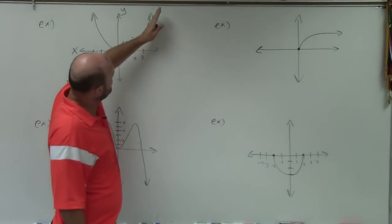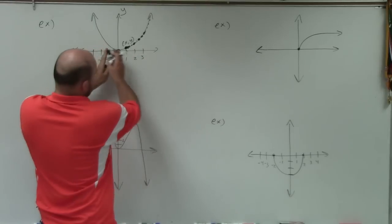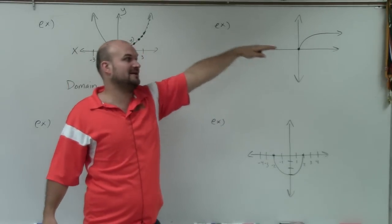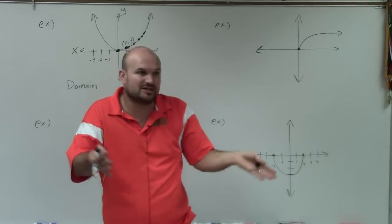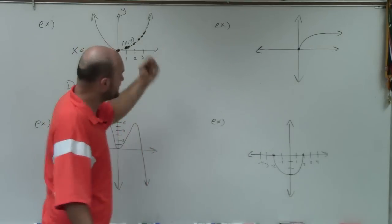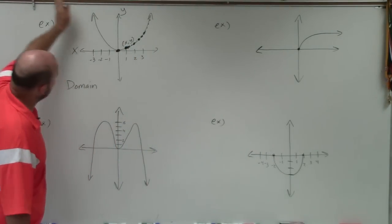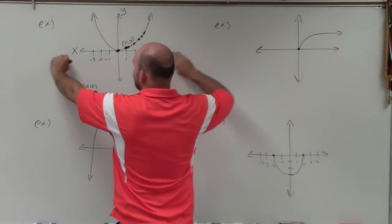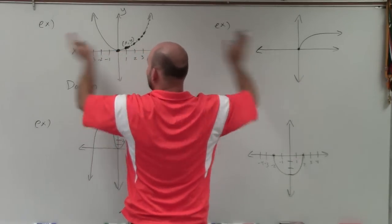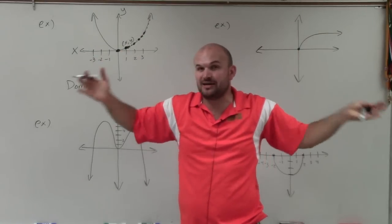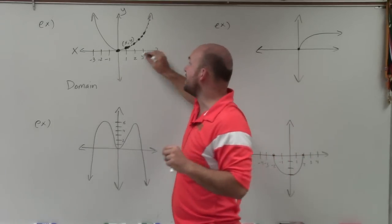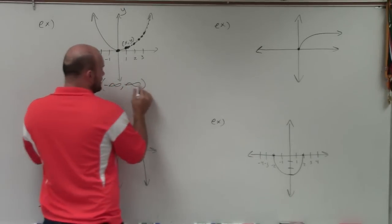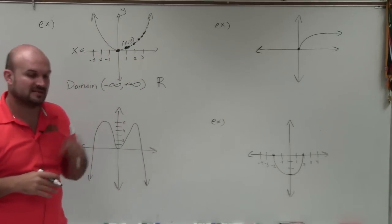If you look at this graph and consider the end behavior, you can see this graph is going to keep going up and over to the right. As we expand the x-axis and y-axis, this graph continues going to infinity. Is there any value on the x-axis where x won't have a coordinate point? No — for every x value, positive or negative, you're going to have a y-coordinate. So our domain is from negative infinity to positive infinity, or all real numbers.